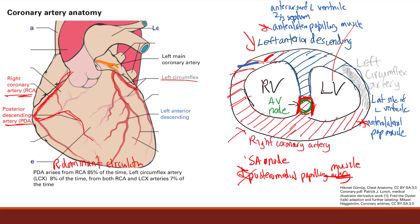And also the sinoatrial node, which is supplied by the right coronary artery. That's it for our anatomy of the heart.